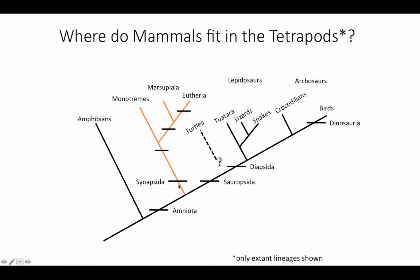Let's start with the amniotes and the split between synapsids and sauropsids. All of the reptiles, birds, and dinosaurs are on the sauropsid side, and then the mammals. We're only looking at the extant mammals on the synapsid side. The first dichotomous split within the mammals is between the monotremes on one side and the marsupials — also known as the metatheria — and the placentals. Marsupials and placentals are more closely related to each other than either of them are to the monotremes. Monotremes are actually a very early diverging group from the rest of the mammals.